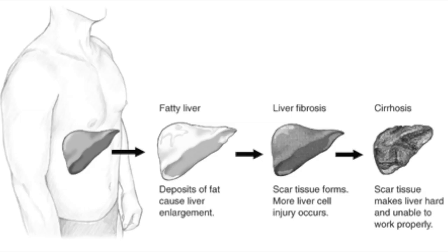To test for asterixis, take the patient's hand, tell them to hold it out, push their hand into extension, and tell them to hold it there. You will then see them flapping their hand down due to brief relaxation of the extensor muscles of the wrist. When you suspect hepatic encephalopathy, high ammonia levels are the problem. Lactulose and the antibiotics neomycin or rifaxamine are usually the first-line treatment options. Lactulose is non-absorbable in the gut, and gut bacteria convert it into lactic acid, pulling ammonia into the gut for excretion.